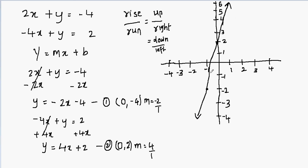I'll make arrows on the line. Now we're done graphing the second line. Let's graph the first line. I start with the y-intercept, which is negative 4 — so my starting point is (0, negative 4). The slope is negative 2 over 1, meaning the rise is negative, so normally I would go down 2 and then move to the right 1.